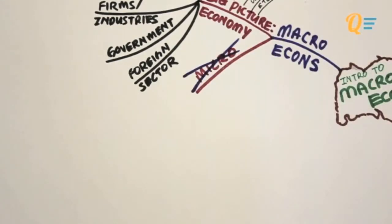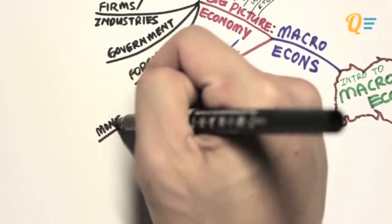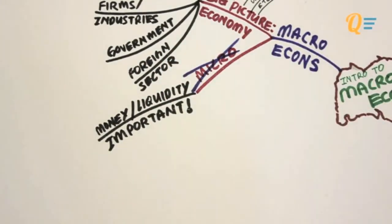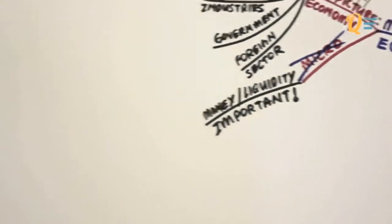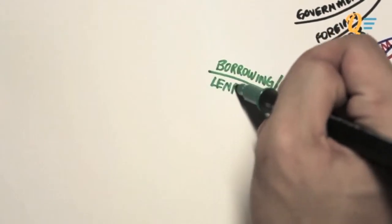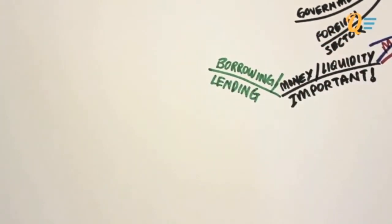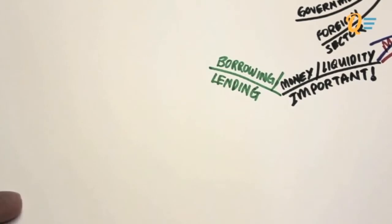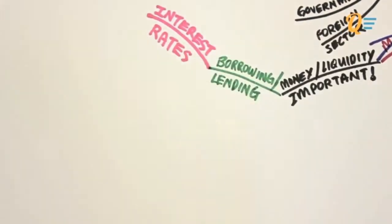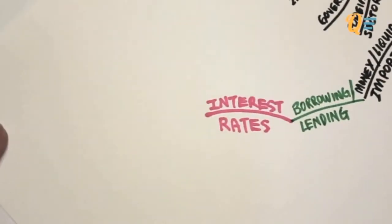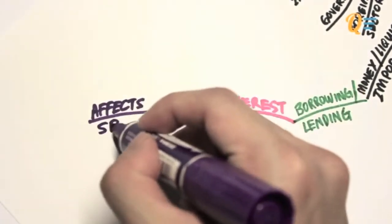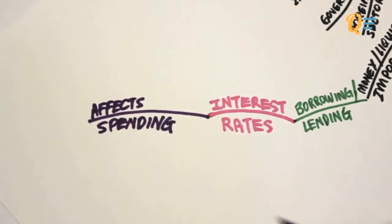How this is different from microeconomics is that money takes a whole new level of importance when it comes to our analysis. Money is also known as liquidity. With money in the picture, what will occur is borrowing and lending activities. People borrow and lend for many different reasons. And when there's borrowing and lending, what you actually have is this thing called interest rates. If you're going to borrow money, you're going to have to pay interest, and if you lend money, you're going to be earning interest income. Interest rates actually affect the level of spending in this particular economy.